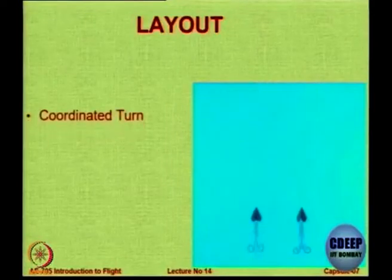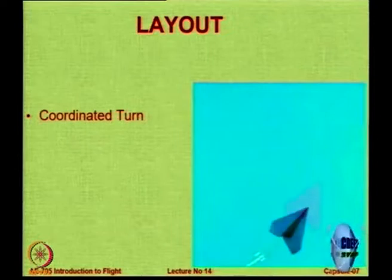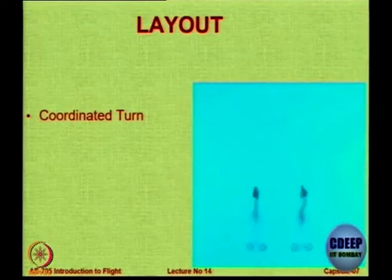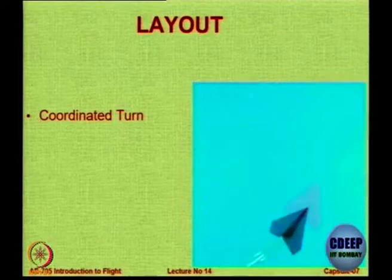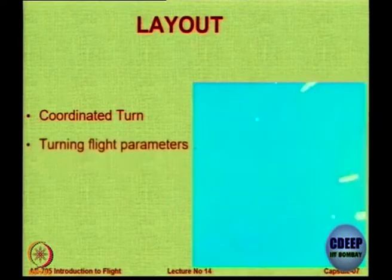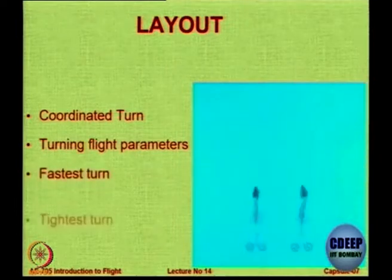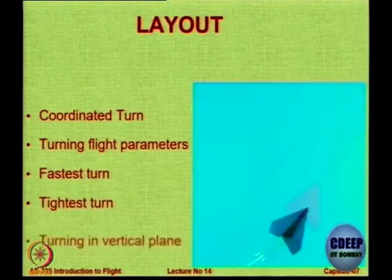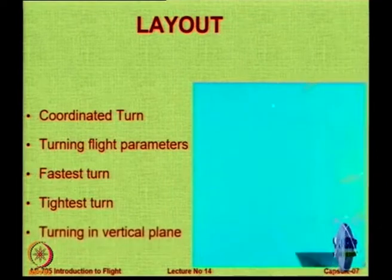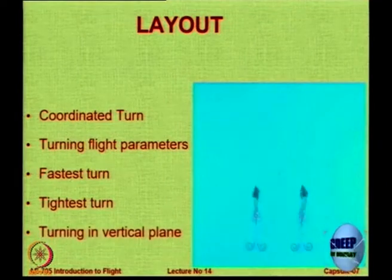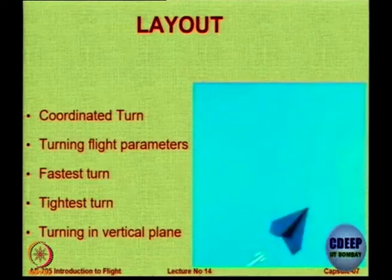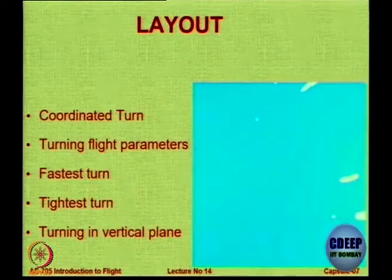So this is today's layout. We are going to look at what is meant by a coordinated turn, define it and show what it is. Then we look at turning flight parameters: fastest turn, tightest turn, and finally turning in a vertical plane. The previous turns are in the horizontal plane; the last one is in the vertical plane.